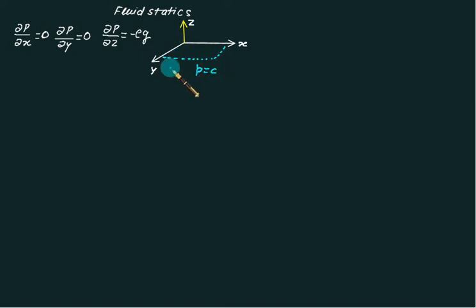But if this plane will change along the z-axis, then the pressure will change. Hence we have the hydrostatic law, dp by dz equals minus rho g. Using this formula you can calculate all problems of manometers.